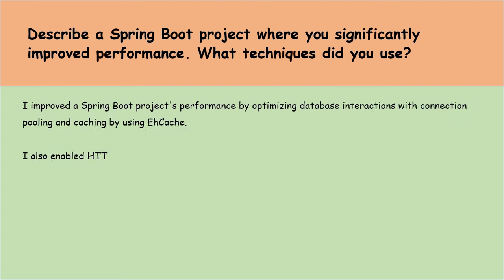How do you tell an auto-configuration to back away when a bean already exists? In Spring Boot, to make an auto-configuration step back when a bean already exists, we use the @ConditionalOnMissingBean annotation. This tells Spring Boot to only create a bean if it doesn't already exist in the context. For example, if we are auto-configuring a DataSource but want to back off when a DataSource bean is manually defined, we annotate the auto-configuration method with @ConditionalOnMissingBean passing DataSource.class. This ensures our custom configuration takes precedence and Spring Boot's auto-configuration will not interfere if the bean is already defined.